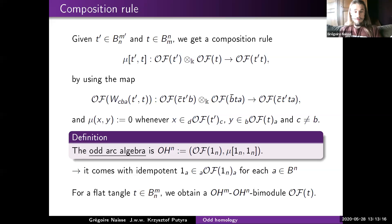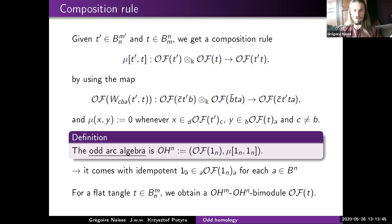This gives a composition rule for elements having the same closure on top and bottom; if the closures are not compatible, the multiplication is declared to be zero. In particular, considering only the identity tangle gives an internal composition law — so we have an algebra — the odd arc algebra, which comes with a collection of idempotents given by the product of the unit of the exterior product in your super-algebra, one for each crossingless matching.